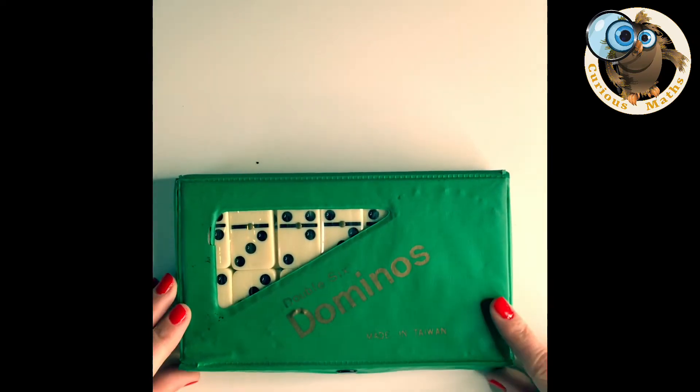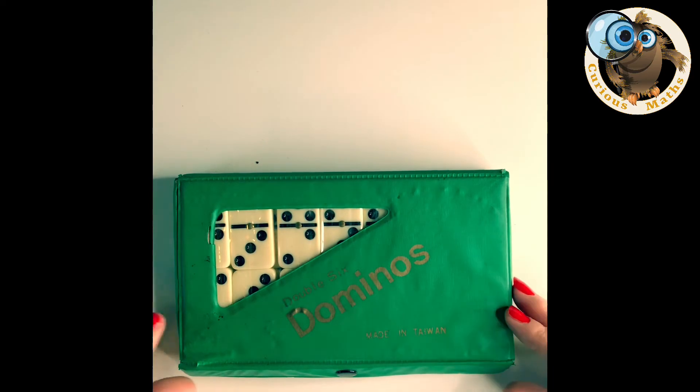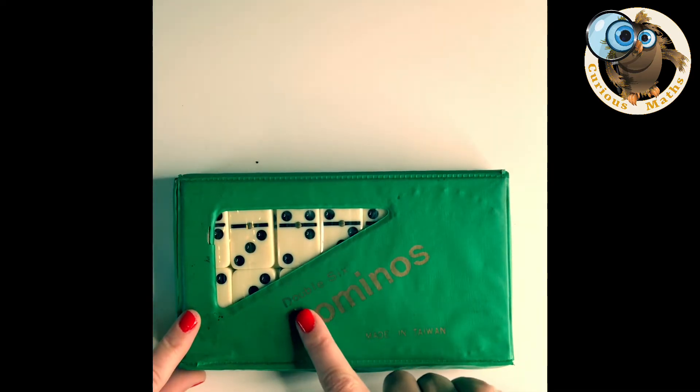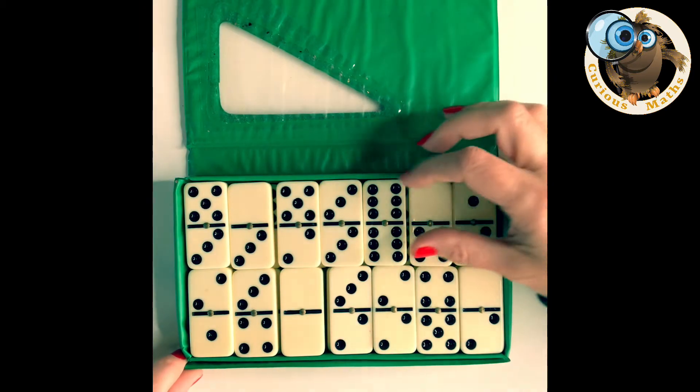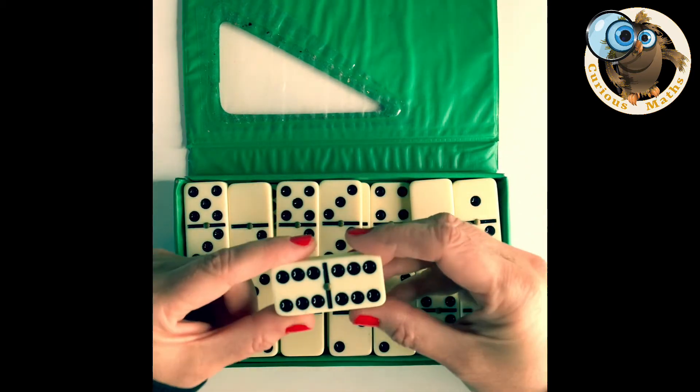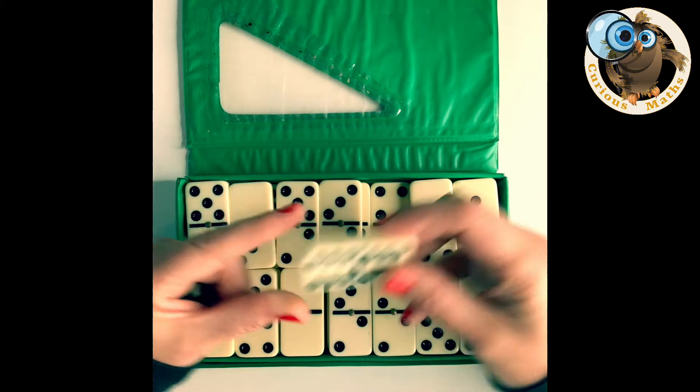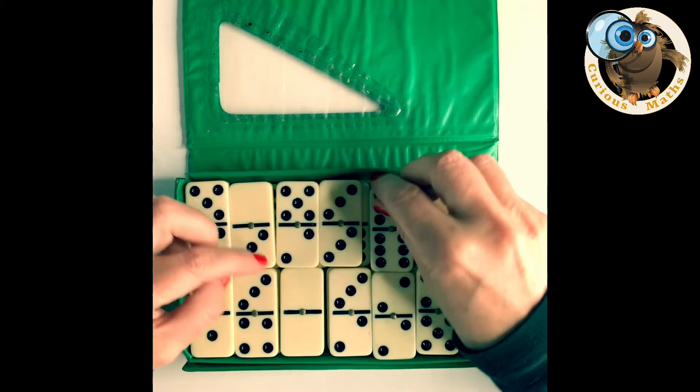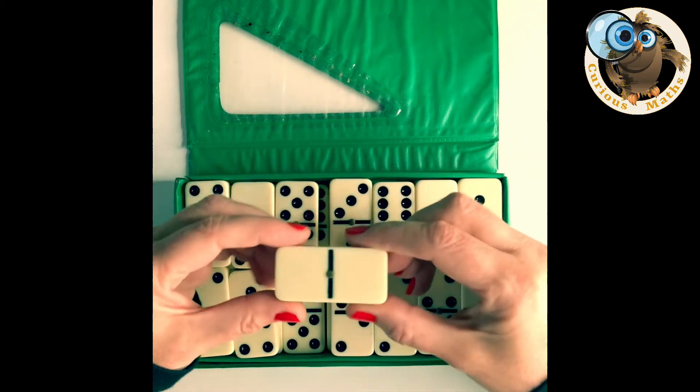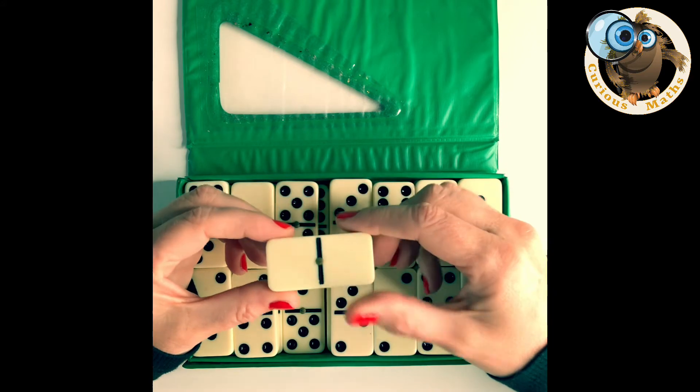So before we start playing with the dominoes I just want to say a few things about the set that I'm using today. So as you'll notice this is a double six set of dominoes and what that means is the heaviest domino is a double six and all the patterns range right down to the lightest domino that is double zero.